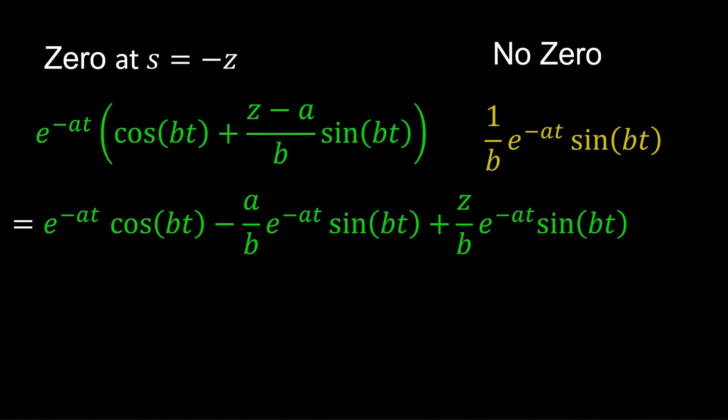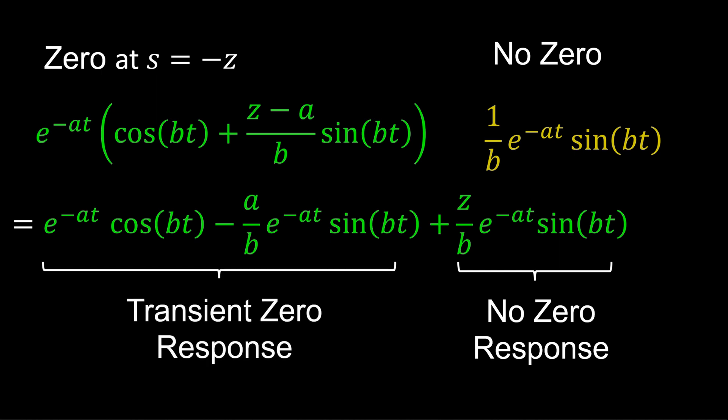So, in the single zero transient response, we have the original no zero response scaled by Z, and additional transient responses due to the zero.